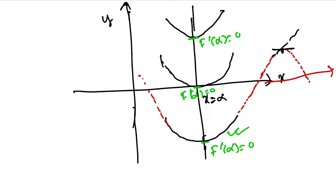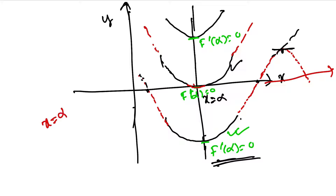Since F(x) is continuous and has only one extremum, after crossing the x-axis it cannot return to the x-axis. Therefore, in this case F(x) has at most two real roots. For the second curve shape, by the same reasoning — F(x) has only one extremum — it will not come back to the x-axis again. In this case, the maximum possible real root occurs at x = α, where the curve touches the axis, making x = α a repeated root.